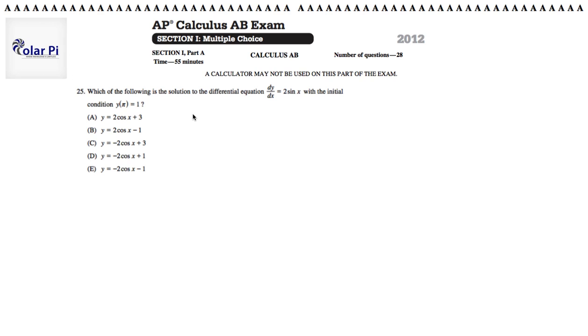Problem 25 says which of the following is a solution to the differential equation dy dx equals 2 sine x with initial condition of y of pi is equal to 1. So basically, each of these functions is clearly viewed as a function of x, and when we plug in pi, we should get 1 for the corresponding y value. That is, when x equals pi, y is equal to 1.